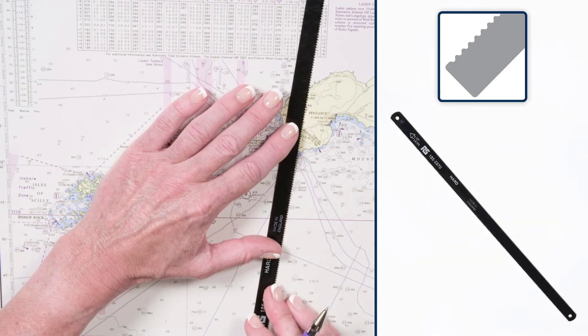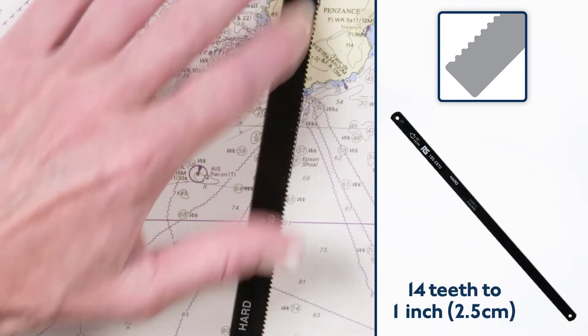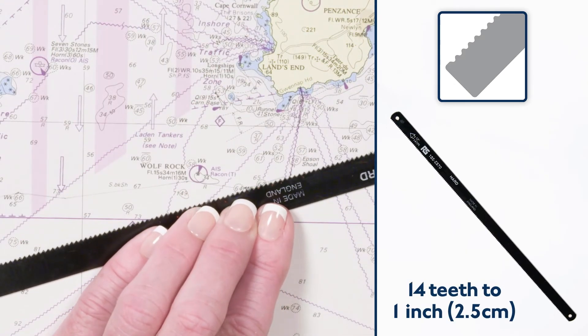A hacksaw blade can be used to draw the symbol for a cable. The blade should have 14 teeth to 1 inch or 2.5 cm.